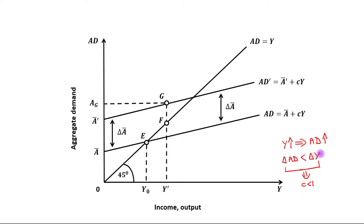The whole increase in income was not spent on consumption — only a fraction of that increase in income was spent on consumption. Due to this, the gap between aggregate demand and output level has been reduced to GF.